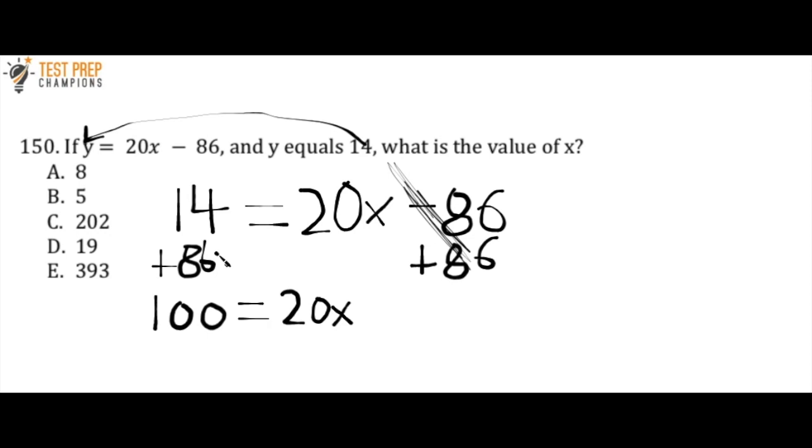So I have 100 equals 20x. So 20x is really 20 times x. And in order to get rid of this 20 and get the x by itself, I want to do the opposite of times, which is division or to divide. So if I divide by 20 on this side, the 20s cancel out and I'm left with just x. But whatever I do to one side, I also have to do it to the other side as well. And so I do 100 divided by 20 and that gives me 5. So the answer here is 5.